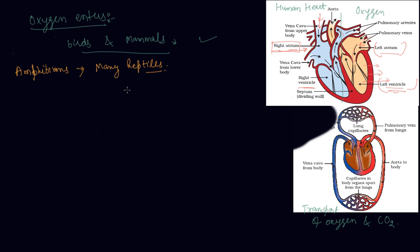In fish, blood passes through the heart only once during each cycle. In humans, blood goes through the heart twice during each cycle. The pulmonary veins carry oxygenated blood from the lungs, while the vena cava carries deoxygenated blood from the body — this illustrates the transportation of oxygen and carbon dioxide as shown in the diagram.